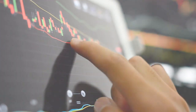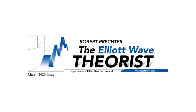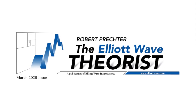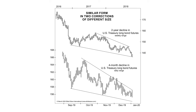Fans of Elliott Wave analysis have been using this information to their advantage for decades. Our March 2020 Elliott Wave Theorist gave subscribers two important real-time examples of fractals at work. Here's the first one, along with the commentary: This figure offers a good illustration of the fractal nature of markets. It shows the correction in T-bond futures of 2016-2018 on a weekly chart, against the correction in the last four months of 2019 on a daily chart. They look quite similar, and each one led to a run to new highs.